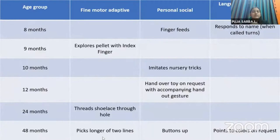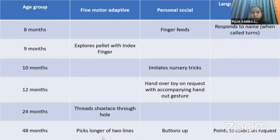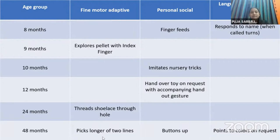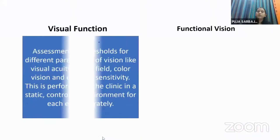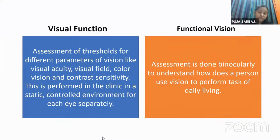At eight months, children start finger feeding and responding to their name, and explore with the index finger. By nine months they mimic nursery tricks. At twelve months, children hand over toys on request. At 24 months they can do lace threading, putting laces through holes precisely. At 48 months they button their shirts and point to colors on request.